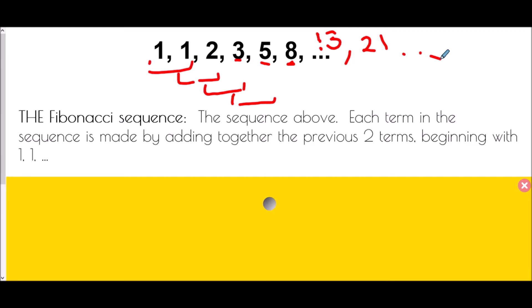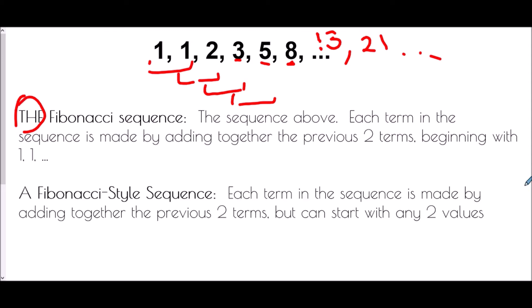What you're more likely to see isn't the Fibonacci sequence itself, because the Fibonacci sequence must begin with the numbers one and one. What you are more likely to see is a Fibonacci-style sequence. In these sequences, it's still the same rule — we add together the previous two terms to make the next one — but you can start with any two values.